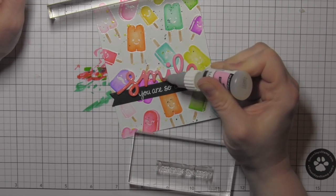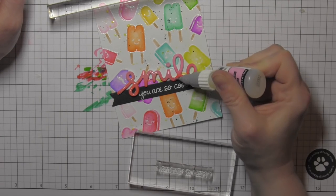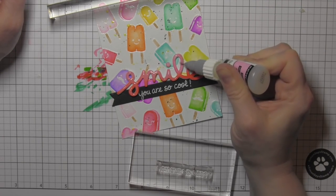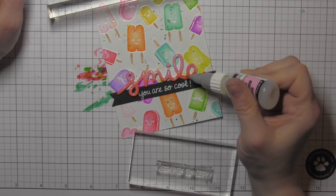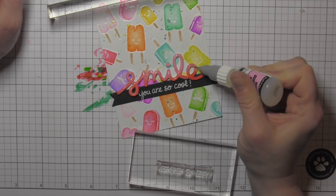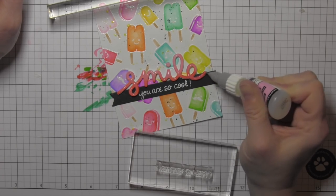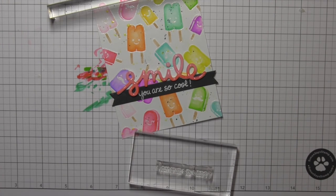So I'm going to do that before I add my sequins. That way it can dry, I can leave the panel sitting there. I would suggest letting it sit for maybe an hour or so so that it's really good and dry before you go ahead and attach the panel to a card base, or go ahead and attach it to the card base and then add the Glossy Accents. Either way is fine.